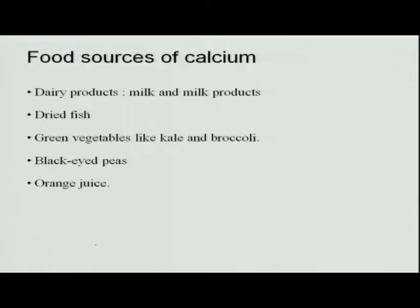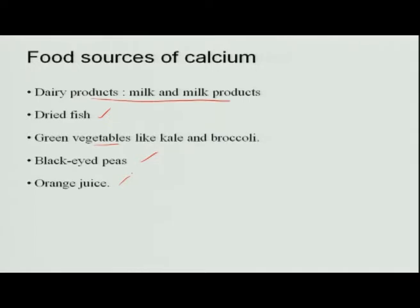Food sources of calcium include dairy products, which are very rich in calcium — all milk and milk products. Dried fish, when eaten completely without discarding the bones, is also a rich source of calcium. Dark green vegetables are also very rich in calcium, as are black-eyed peas and orange juice. These are good sources of calcium to meet the daily requirement.